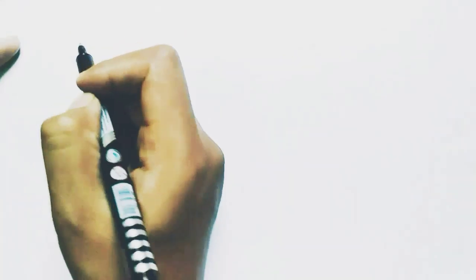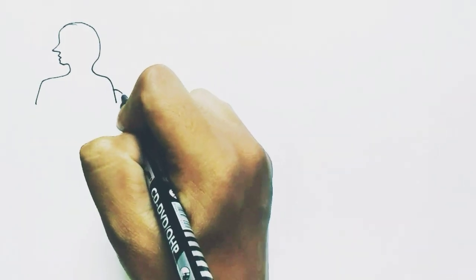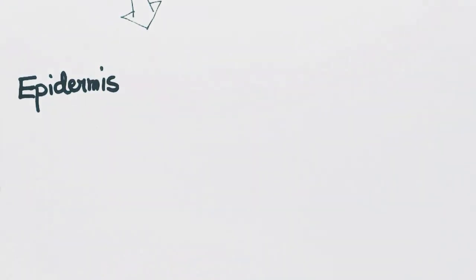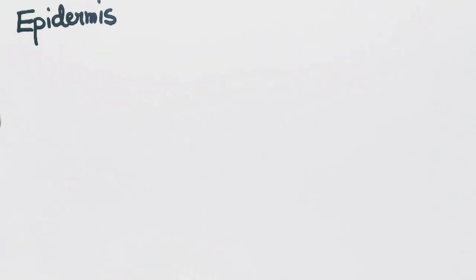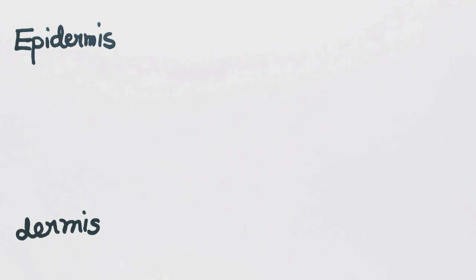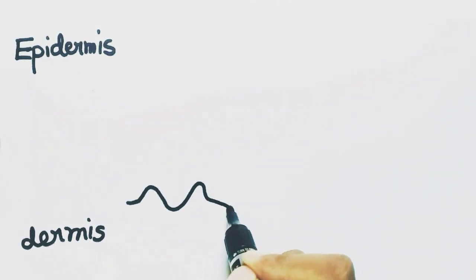Today we are going to talk about the histology of skin, the largest organ of our body which covers the internal organs. The skin has three basic layers: the first layer is the epidermis, next comes the dermis, and below the dermis there is the hypodermis. In the epidermis layer, 90% of cells are keratinocytes.